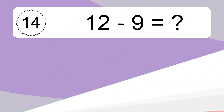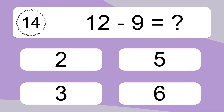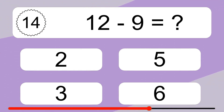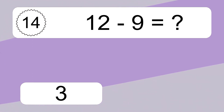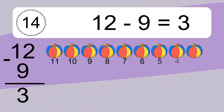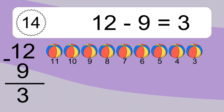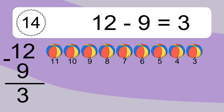12 minus 9 equals what? 12 minus 9 equals 3. Let's count it. 11, 10, 9, 8, 7, 6, 5, 4, 3.